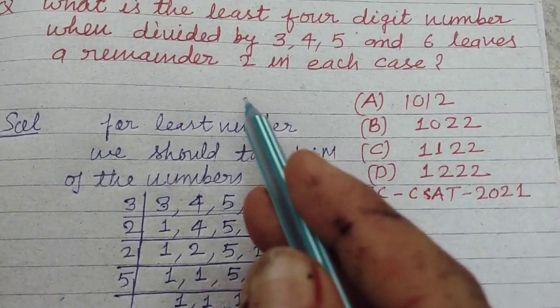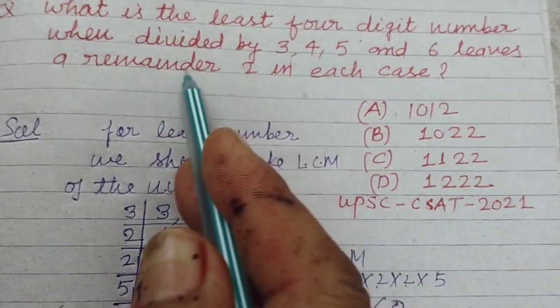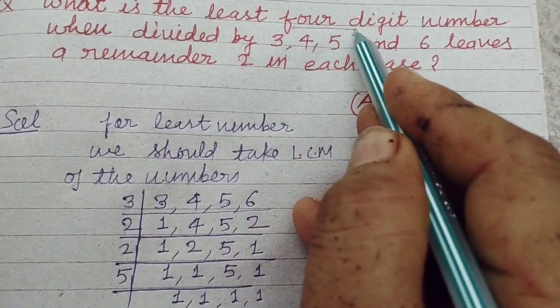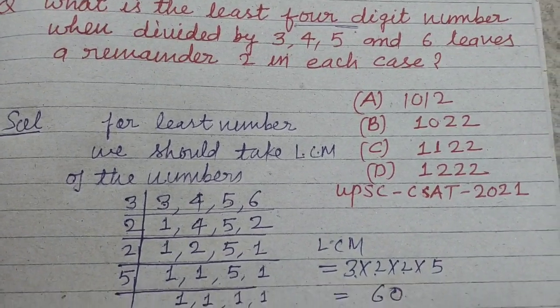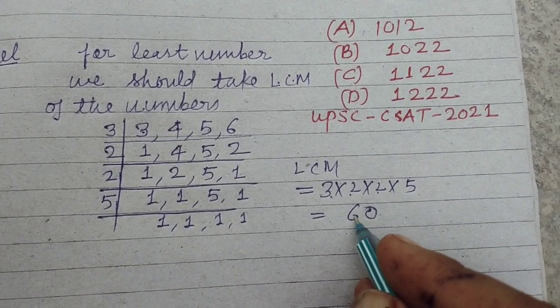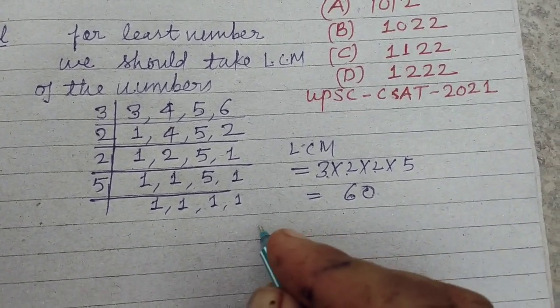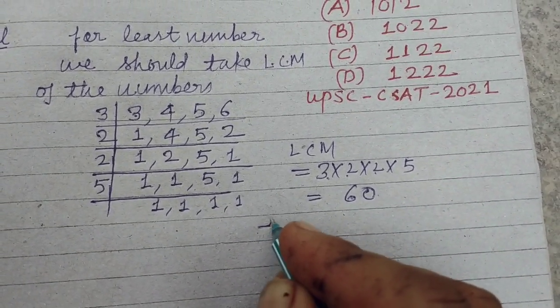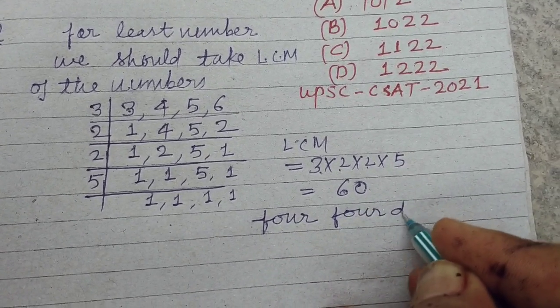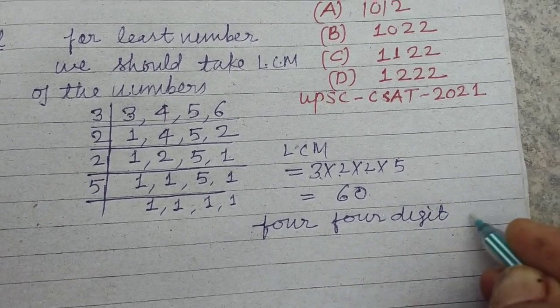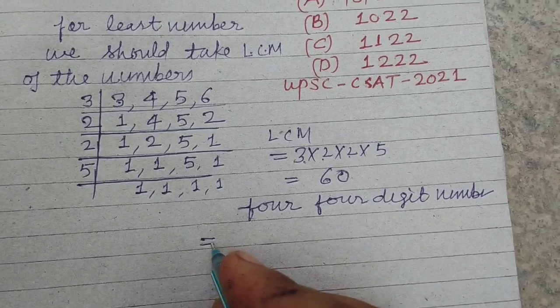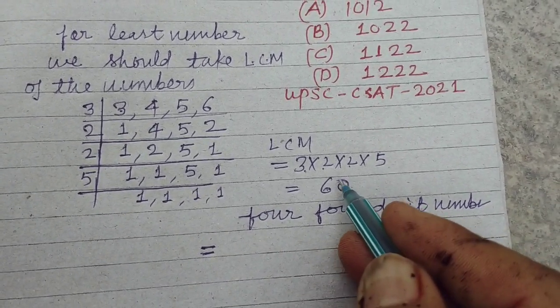The number we want to find out is a four-digit number. What is the least four-digit number? We want to make it a four-digit number. For this we multiply by any number, so for a four-digit number.